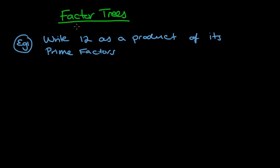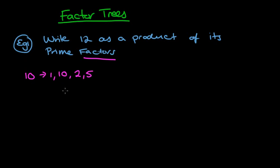Probably the first definition which is most important is the word 'factors', because obviously we're doing a factor tree. A factor is a number that can be divided evenly into another number. So the factors of 10 would be 1 and 10, and 2 and 5 — in order: 1, 2, 5, and 10. I like to pair them because 1×10=10 and 2×5=10. The factors of 12 would be 1 and 12, 2 and 6, and 3 and 4.